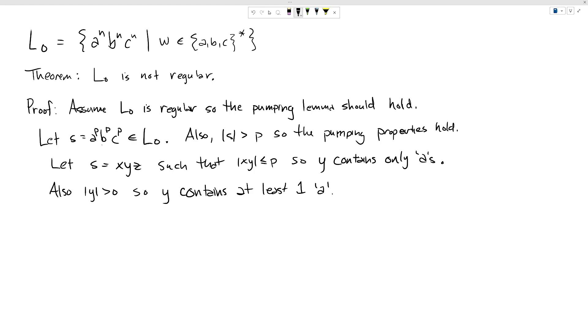So previously, often in this case, I like to pump down. So let's try and pump down. So let's consider XY to the 0 Z, which is going to be XZ, which in our case, we know this is going to modify the number of A's. Initially, we had P of them, but we're going to end up losing however many Y has in it because we've deleted Y out here. And then our B's are going to remain unchanged and our C's are going to remain unchanged. So this string, is this going to be in L0? No, because we don't have a match. So this is not in our language L0. That's enough for us to conclude. So the pumping lemma does not hold. So L0 is not regular. And that completes our proof.